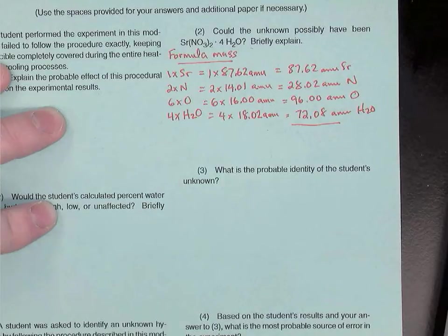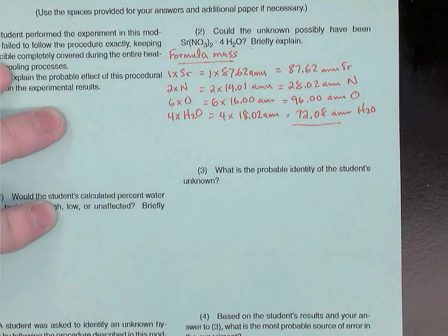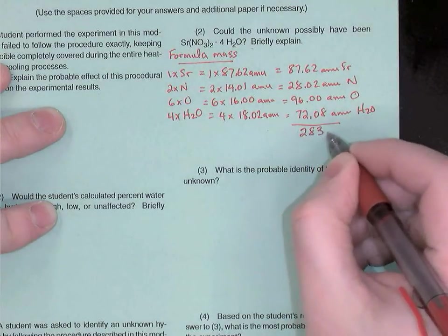This is going to be the formula mass of strontium nitrate tetrahydrate. So we've got... Okay, so we have 87.62, the mass of strontium, plus 28.02, the mass of nitrogen, 96 for oxygen, 72.08 for water. The total formula mass is 283.72 AMUs.